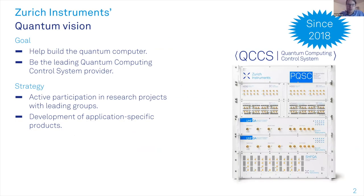Zurich Instruments is very well known for lock-in amplifiers, but in 2014 we also started to look into quantum computing by integrating an AWG into one of our lock-in amplifiers. This grew quickly, and in 2018 we introduced our QCCS system to the market. Our QCCS system is our quantum computing control system, which you can see on the right-hand side in this picture.